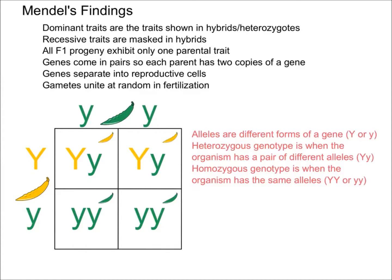The genotype is the actual genetic makeup of the individual. In this instance, the genotype is heterozygous. The phenotype of this organism would be yellow color — that's what is physically expressed.